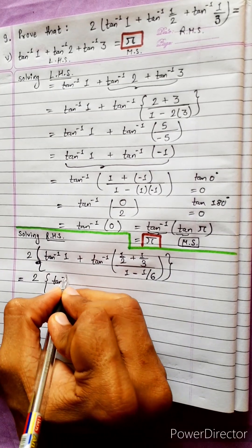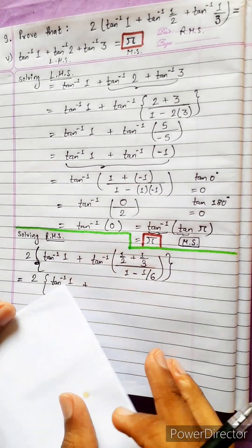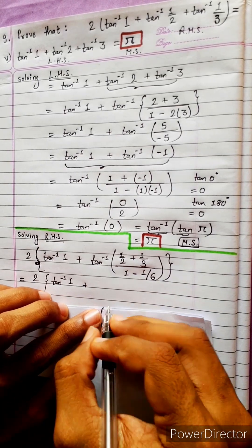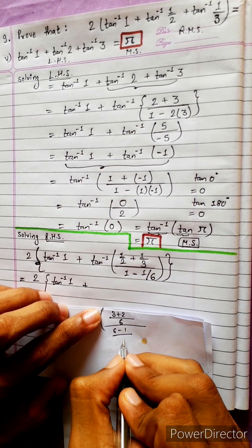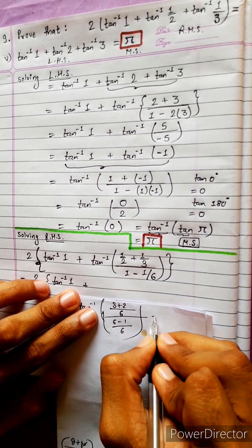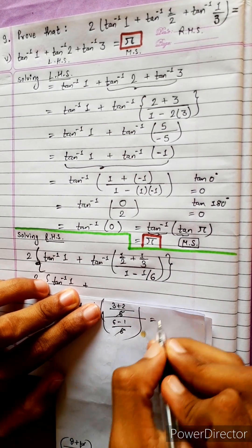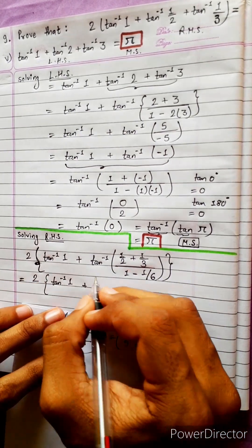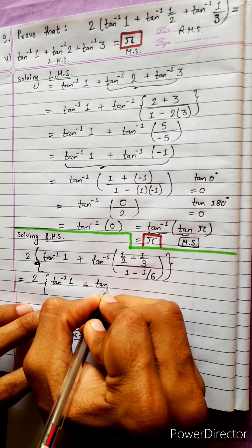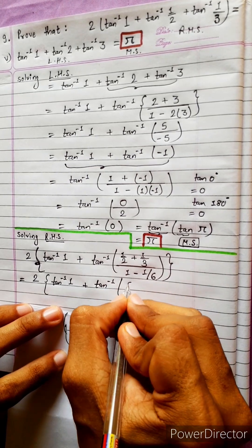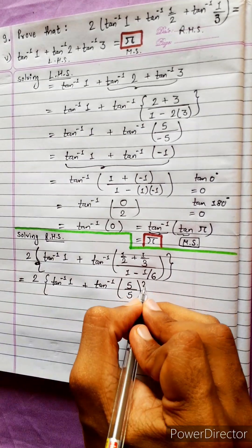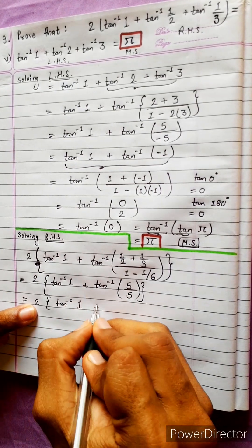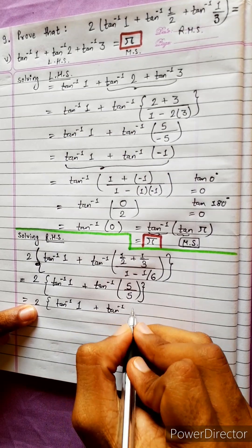We get tan⁻¹(1) + tan⁻¹((3+2)/6) over (6−1)/6. Taking LCM: numerator is (3+2)/6 = 5/6, and denominator is 5/6 as well. So this simplifies to tan⁻¹(1) + tan⁻¹(1).